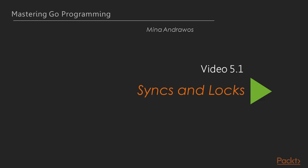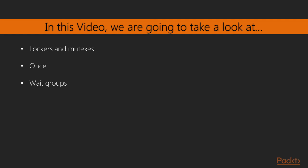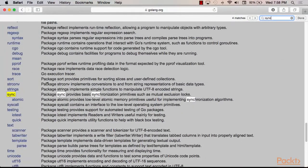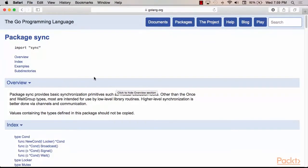Syncs and Locks. Even though Go prefers channels and Go routines for concurrent tasks, there are cases where locking memory is inevitable. In this video, we will discuss three key features for allowing thread locking. First, we will cover regular lockers and mutexes. Then we will talk about the Once type. Then we will conclude by talking about wait groups. So in Go, to access any functionality related to thread locking, we need to use the sync package, which is a standard package in Go. There are numerous features enabled by sync, but we will focus on the most useful and commonly used ones.